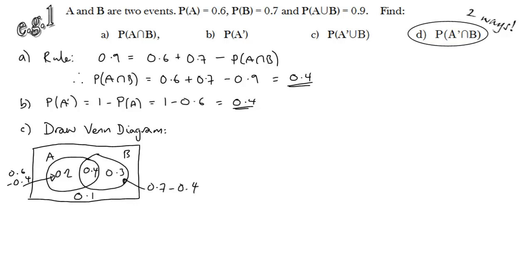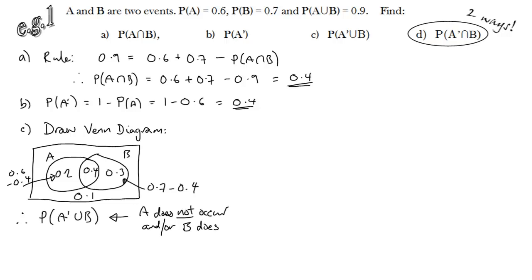What I want is the probability of not A union B. That means either A does not occur, or B occurs, or both. Pause the video and check that you agree that these three regions all satisfy that criteria: 0.3, 0.1, and 0.4. And if you're not sure why, ask me in class. That adds up to 0.8.